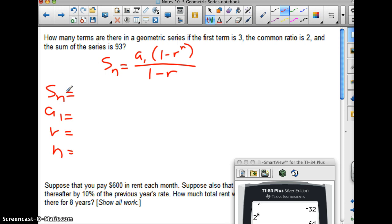S sub n, the sum of the series is 93. First term is 3. A1 is 3. The common ratio is 2. And the sum of the series is that how many terms? That's n. So I'm going to have an n left in there. 93 equals, and now I'm just basically plugging in the known information, all over 1 minus 2.